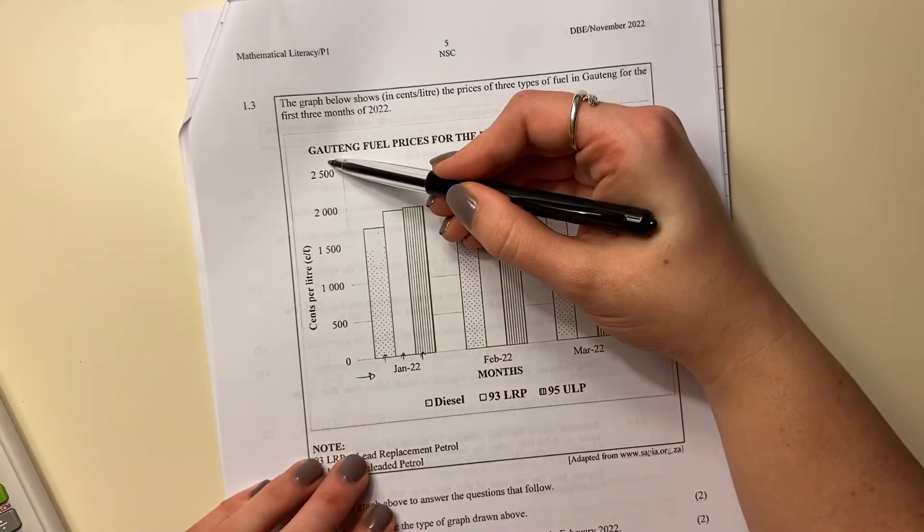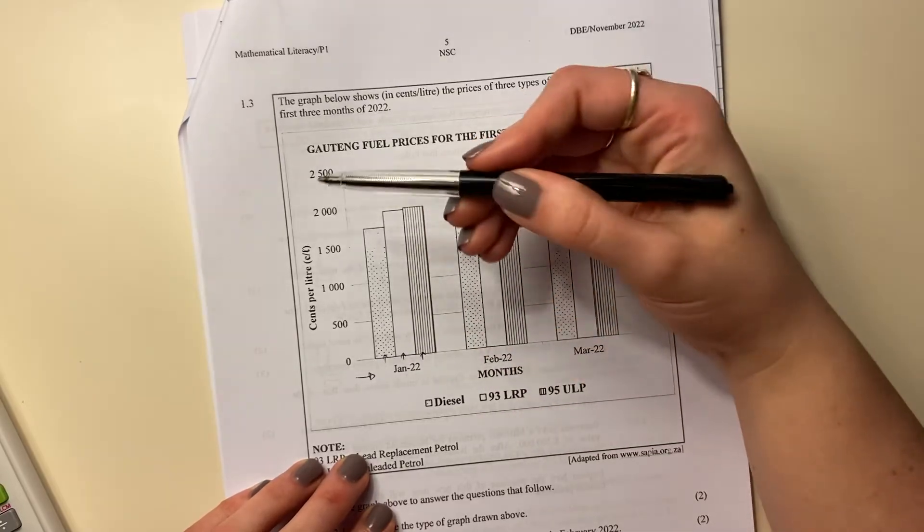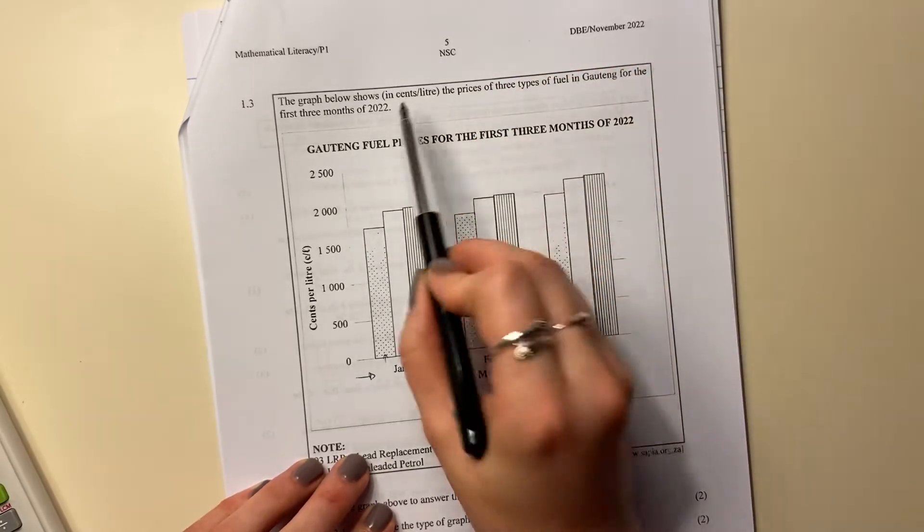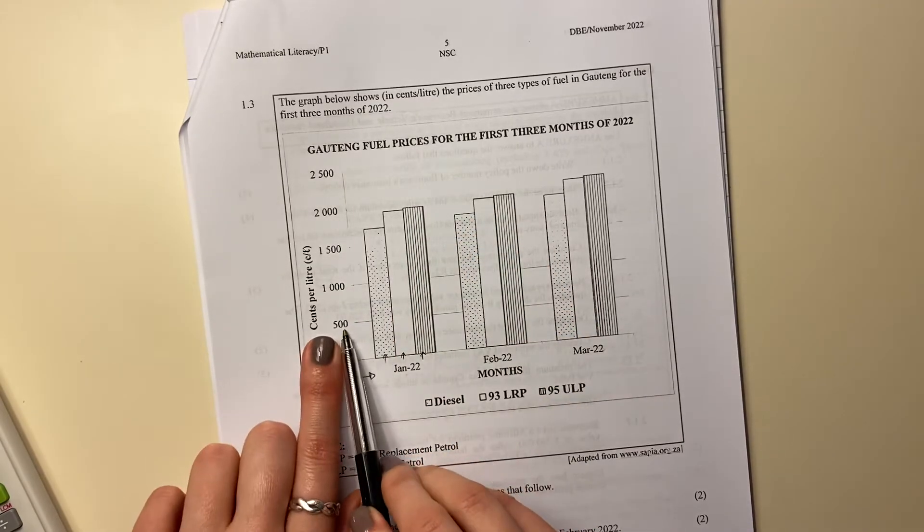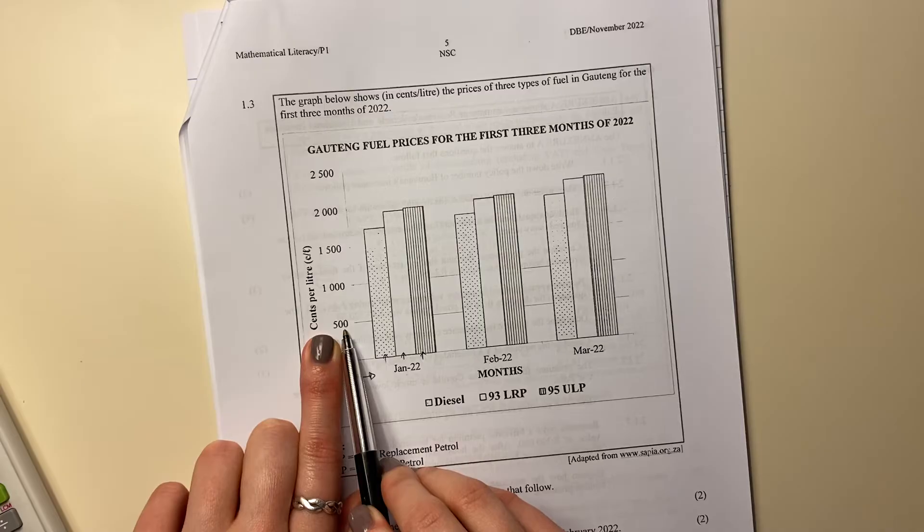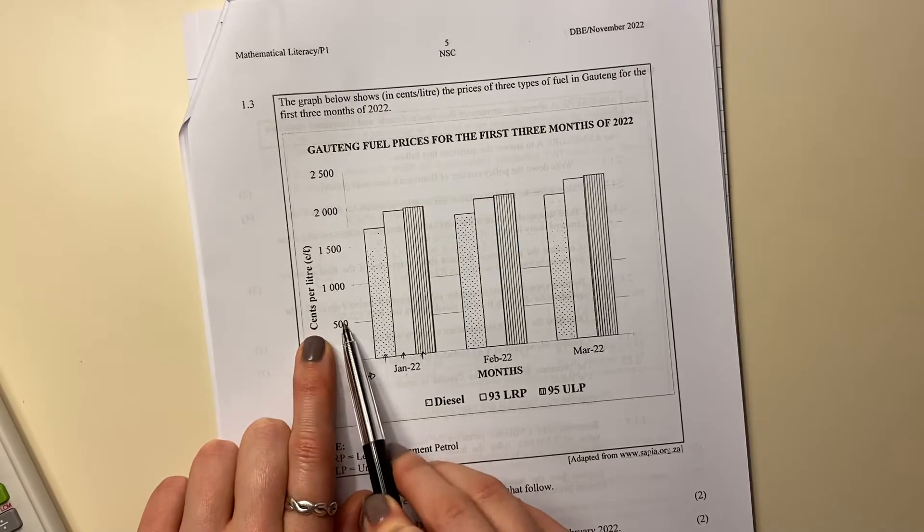And then here, we are going to have the cost. Interestingly here, cost is cents per liter, which is kind of odd. So just be careful when you're looking at this, this 500 that it's 500 cents. So it's actually 5 rand.